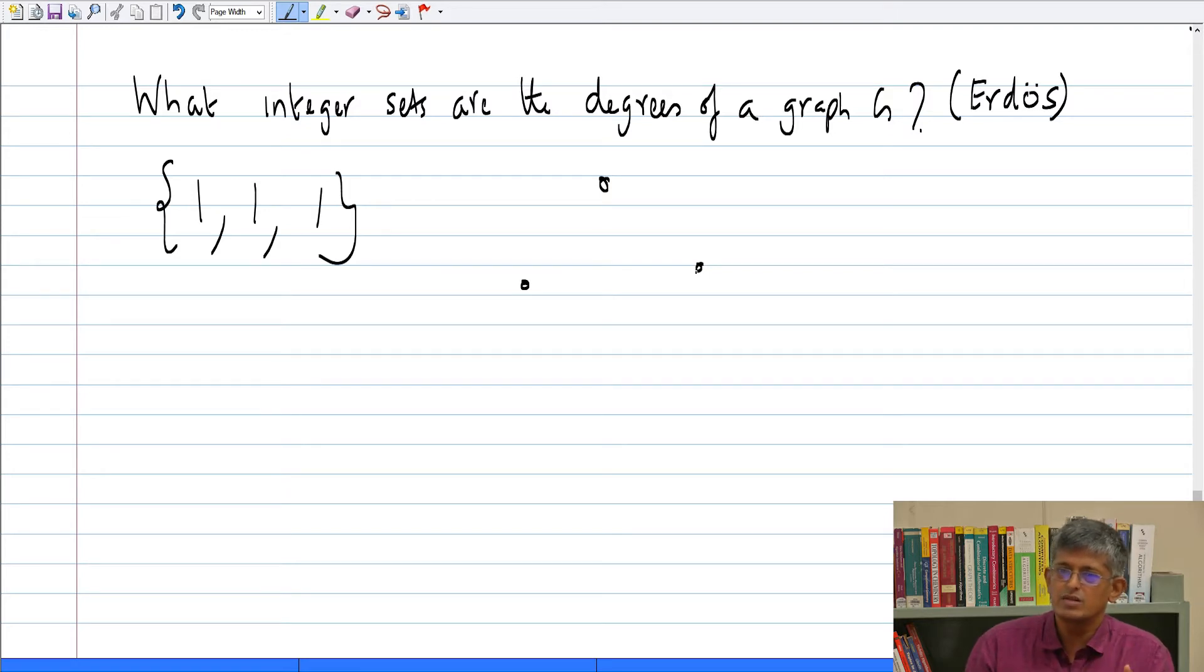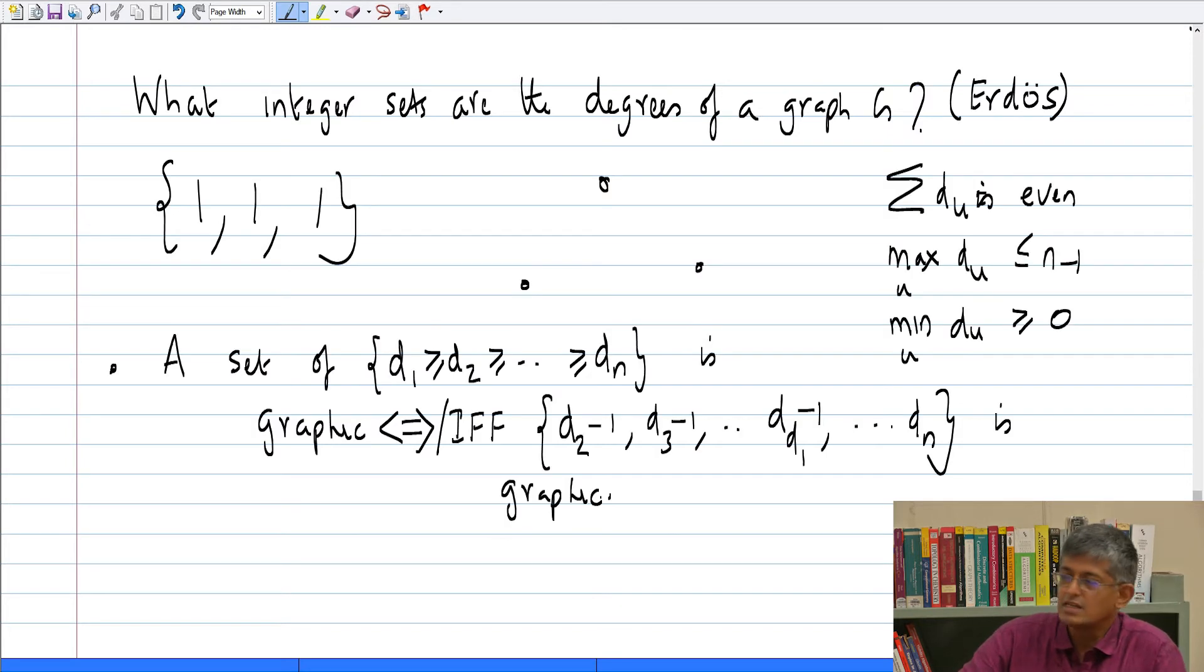But what if I make the situation more complicated? I give you another set. Now can you check? One condition which is important is the sum of degrees must be even. Do you think it is sufficient? Now take a couple of minutes. Give me a degree set where the sum of the degrees is 2 times n minus 1, but you can observe something and tell me that there is no graph with this degree sequence.